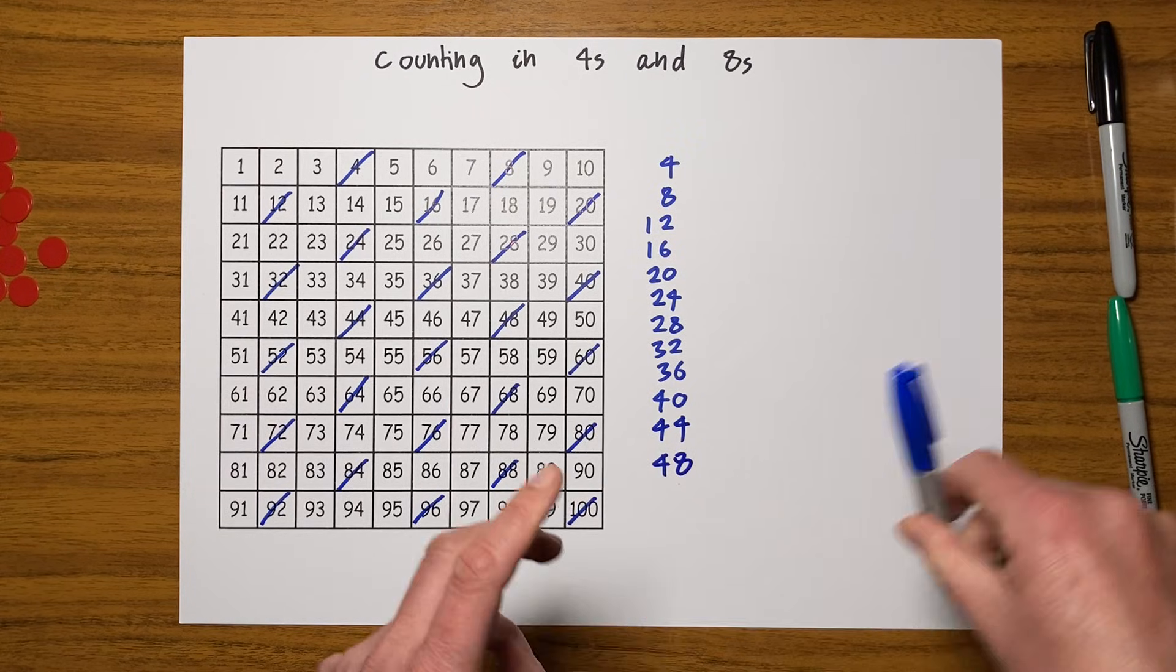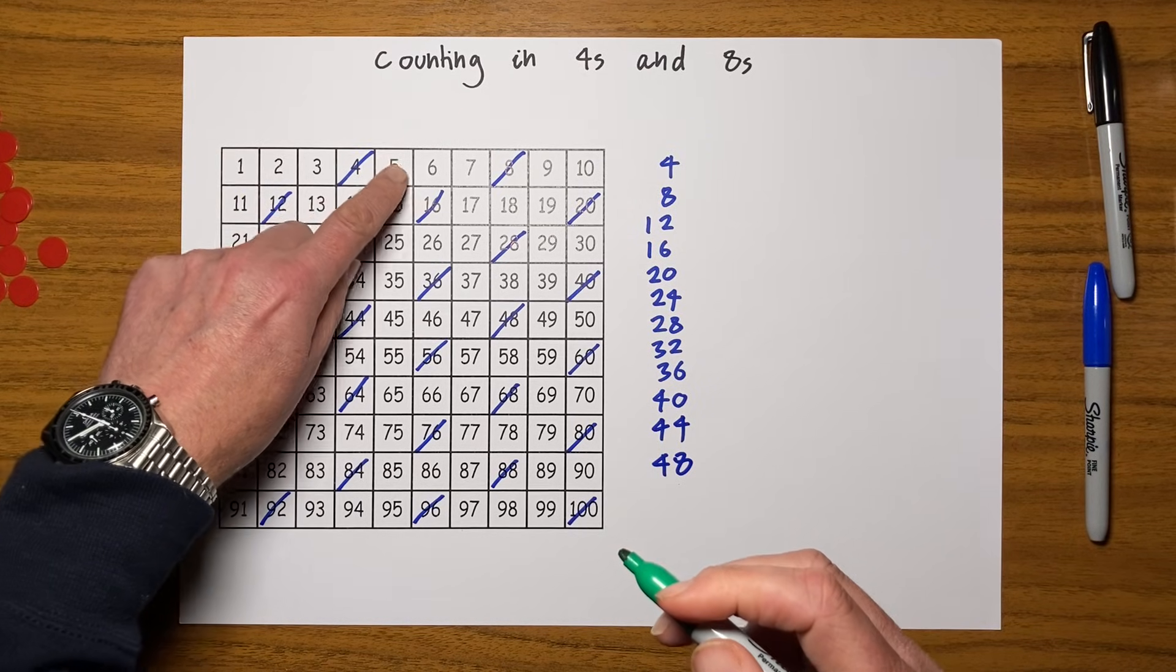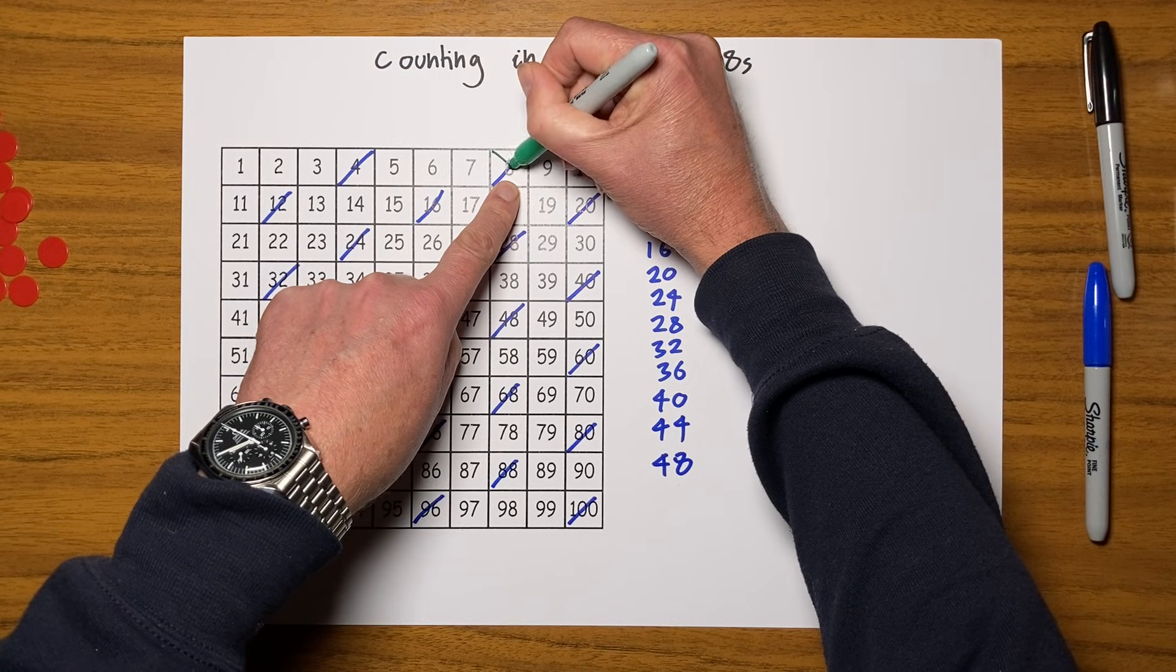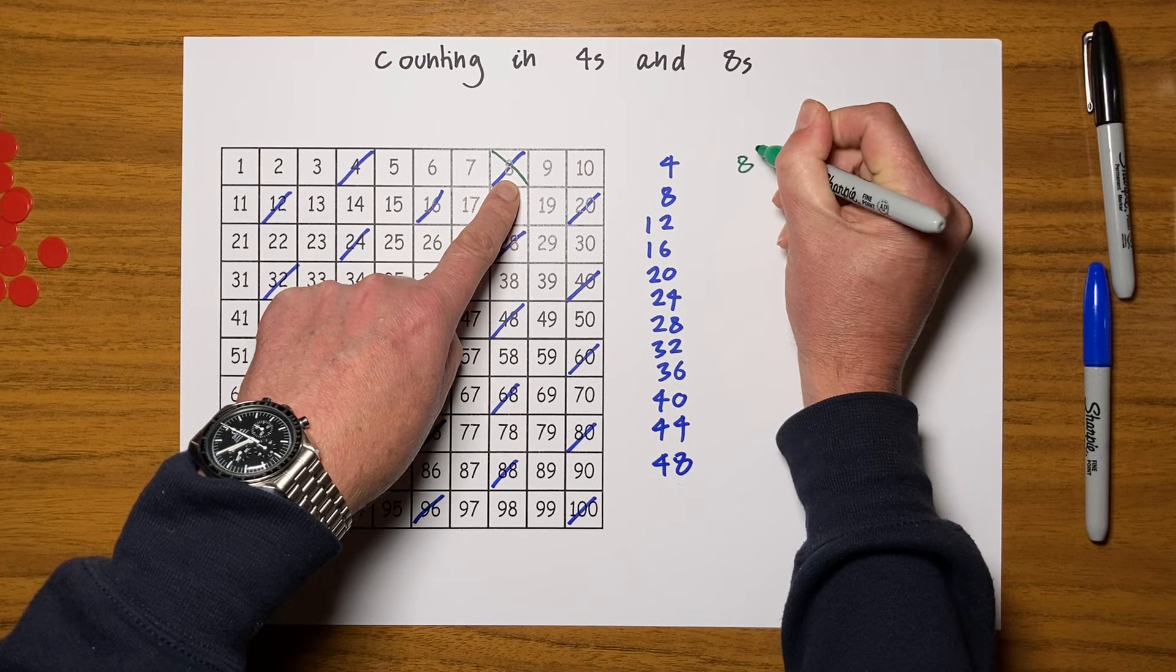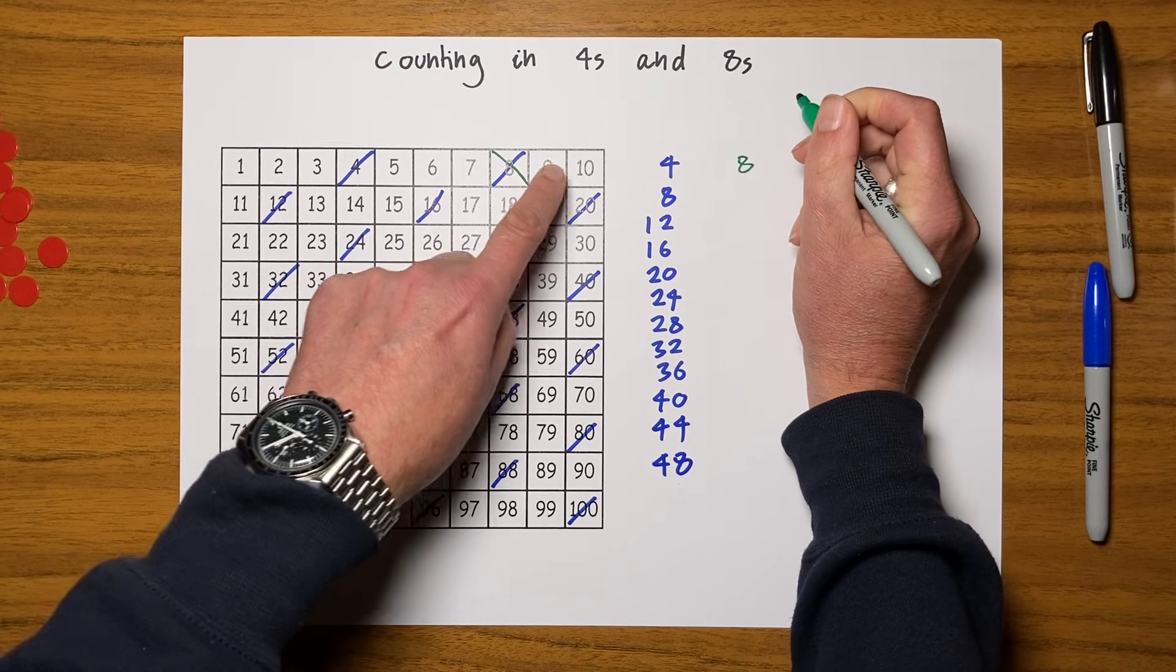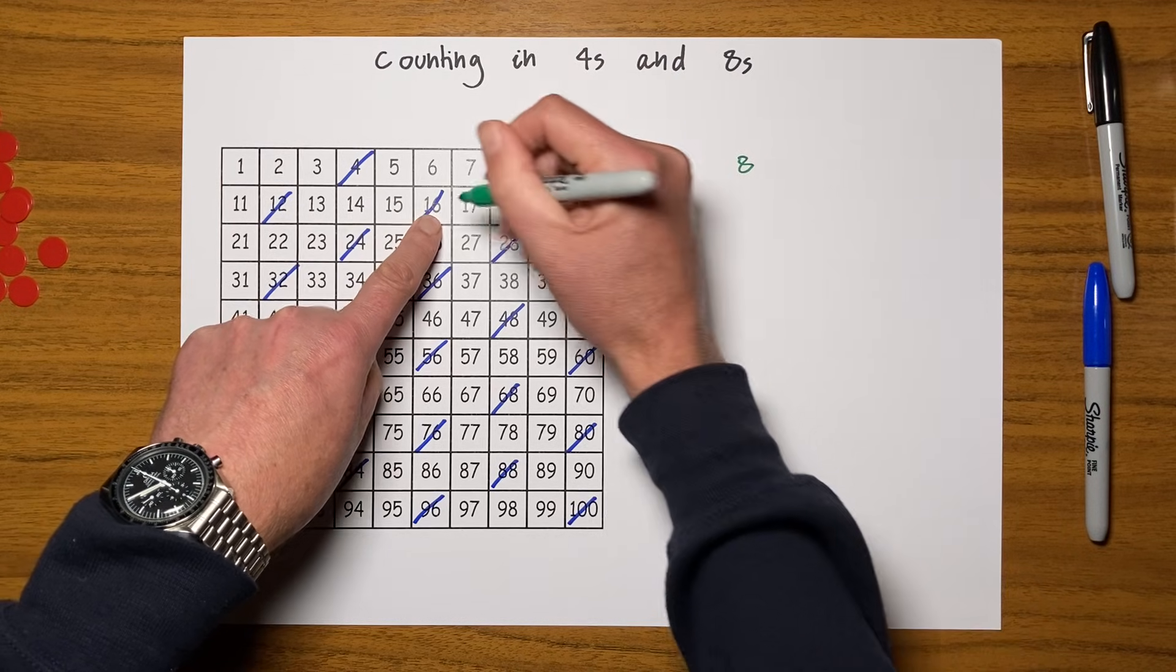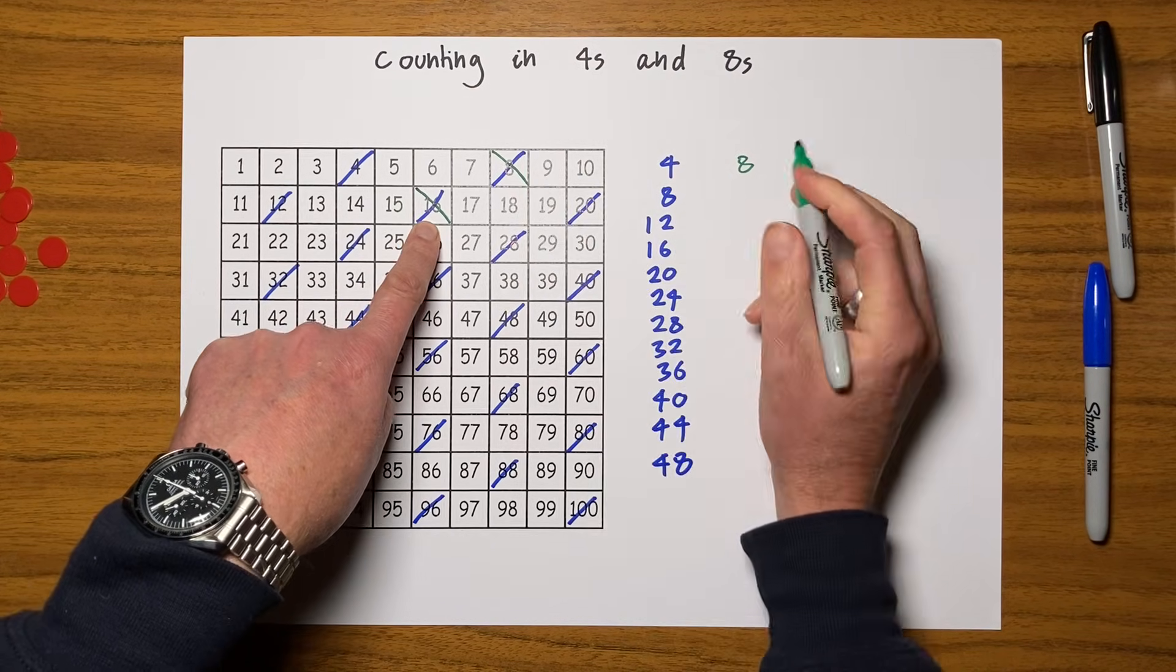Now I'm going to count up in eights. One, two, three, four, five, six, seven, eight. Aha, now this is quite interesting. I'm going to put mine the other way: eight. Let's count another eight. One, two, three, four, five, six, seven, eight. That's twice now it's landed on one of the ones I marked when I was doing fours.